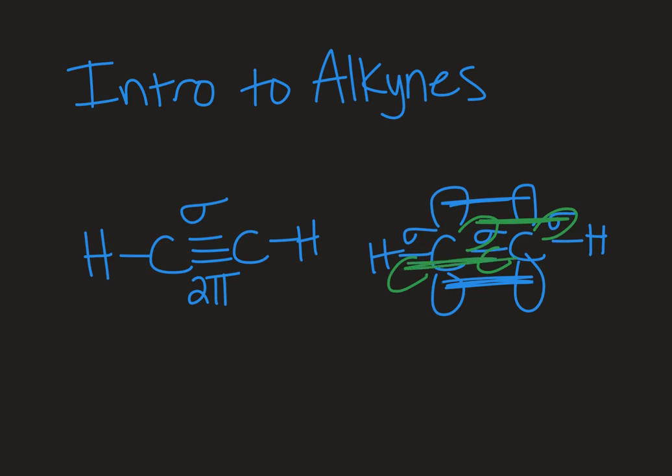So it's sort of this cylinder completely full of electron density, overlapping on top and on the bottom, in the front and in the back, and then directly between the two nuclei with the sigma bond.